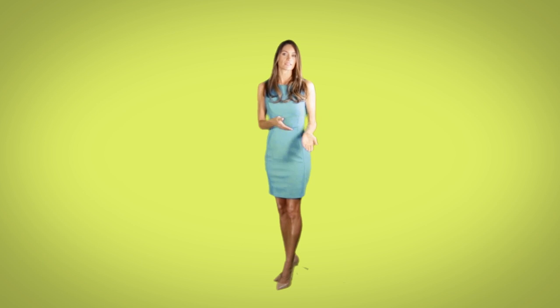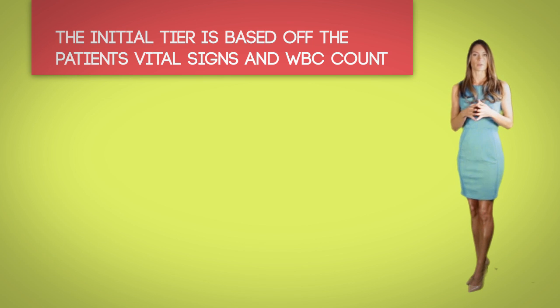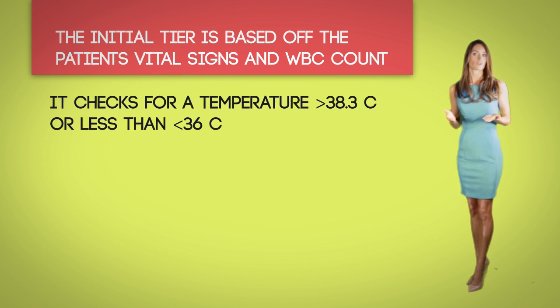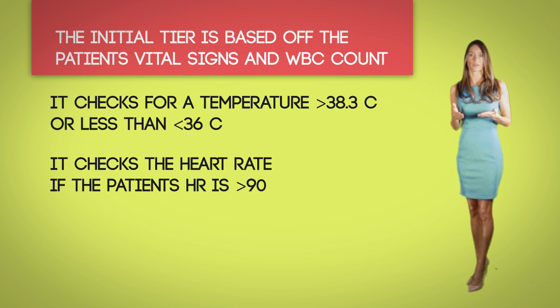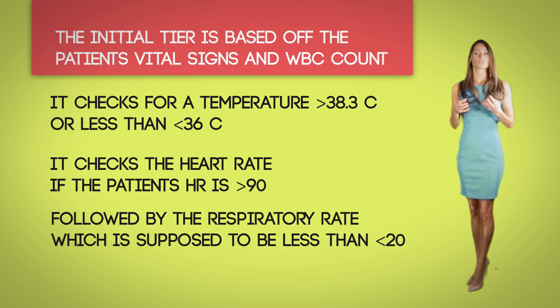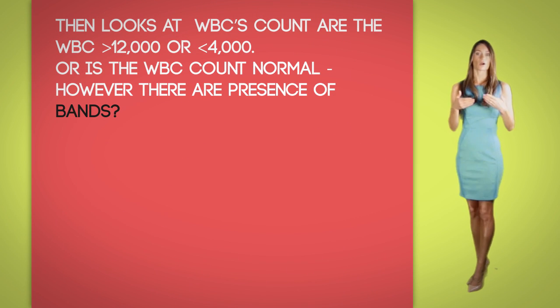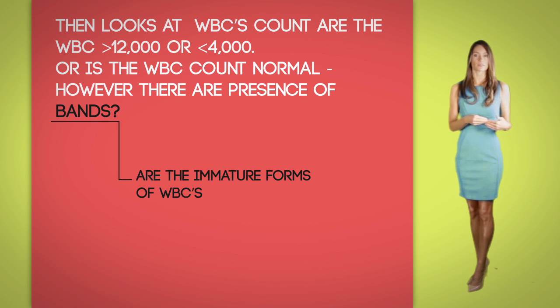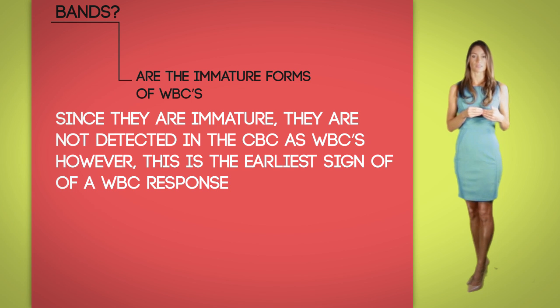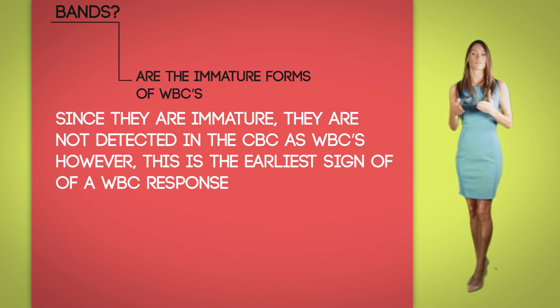The initial tier is based off the patient's vital signs and white blood cell count. It checks for a temperature greater than 38.3 degrees Celsius or less than 36 degrees Celsius, a heart rate greater than 90 beats per minute, a respiratory rate greater than 20, and white blood cells greater than 12,000 or less than 4,000. Or is the white blood cell count normal but with the presence of bands? Bands are the immature forms of white blood cells. Since they are immature, they are not detected on the CBC as white blood cells — however, this is the earliest sign of a white blood cell response. If there are greater than 10% bands, this is concerning.